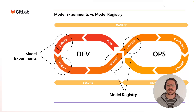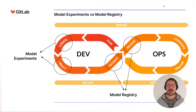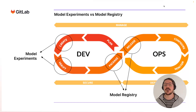You can think of the difference by looking at the DevOps lifecycle: model registry is more associated with packaging and releasing a model, while model experiments is more associated with the create and verify stage of the DevOps lifecycle.